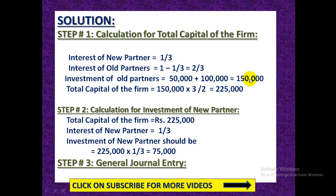So 1,50,000 is the capital of the old partners. Now we find total capital using this amount: 1,50,000 multiplied by 3 divided by 2. The total capital of all three partners — A, B, and C — should be 2,25,000. With that, Step 1 is complete.